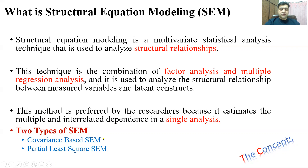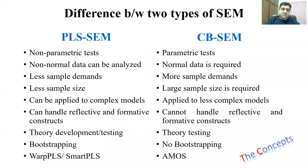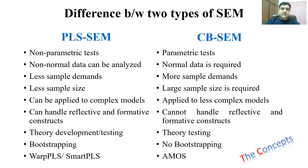When we talk about the two types of SEM, mostly the covariance-based and the partial least squares are used. Let's talk about some of the differences. In PLS-SEM, non-parametric tests are performed on data which is not required to be normal.